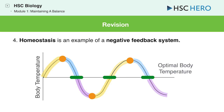Using body temperature as an example: when there is too much of an increase, this system responds by decreasing body temperature. When there is too much of a decrease, this system will increase body temperature.